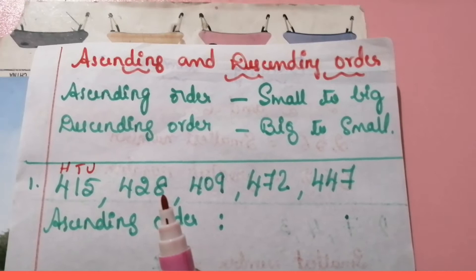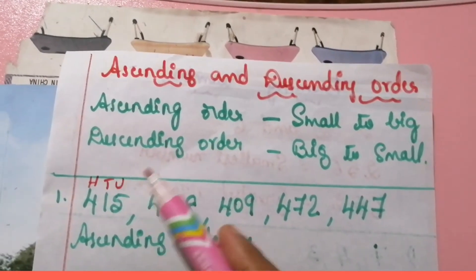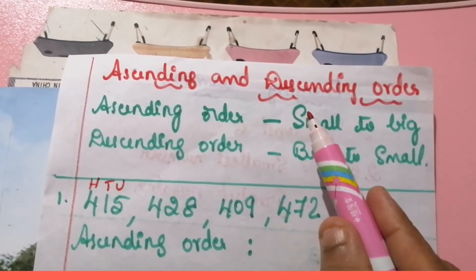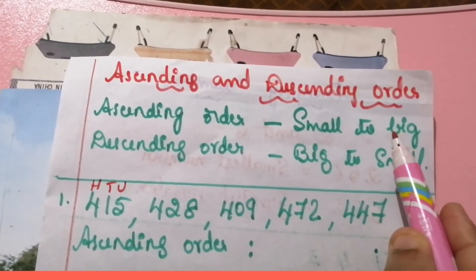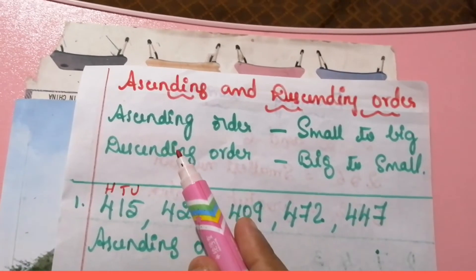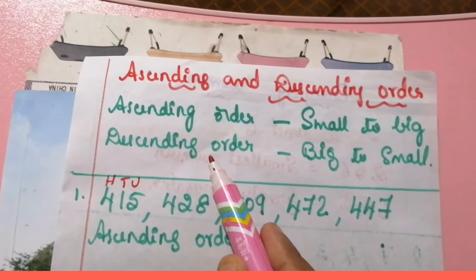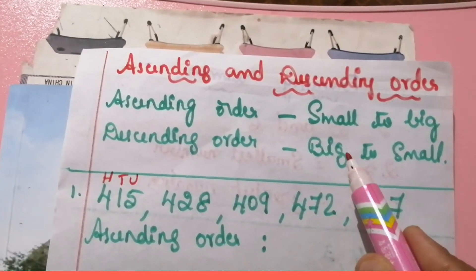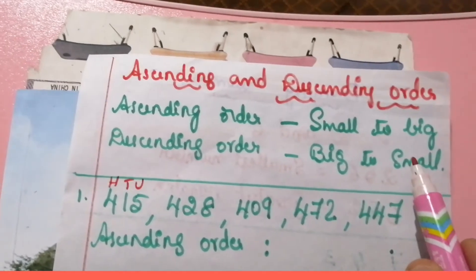When the given numbers are to be written in the ascending order, we have to start from the smaller number to the bigger or greater number. While the given numbers are to be written in the descending order, we start from the greater or bigger number to the smallest number.